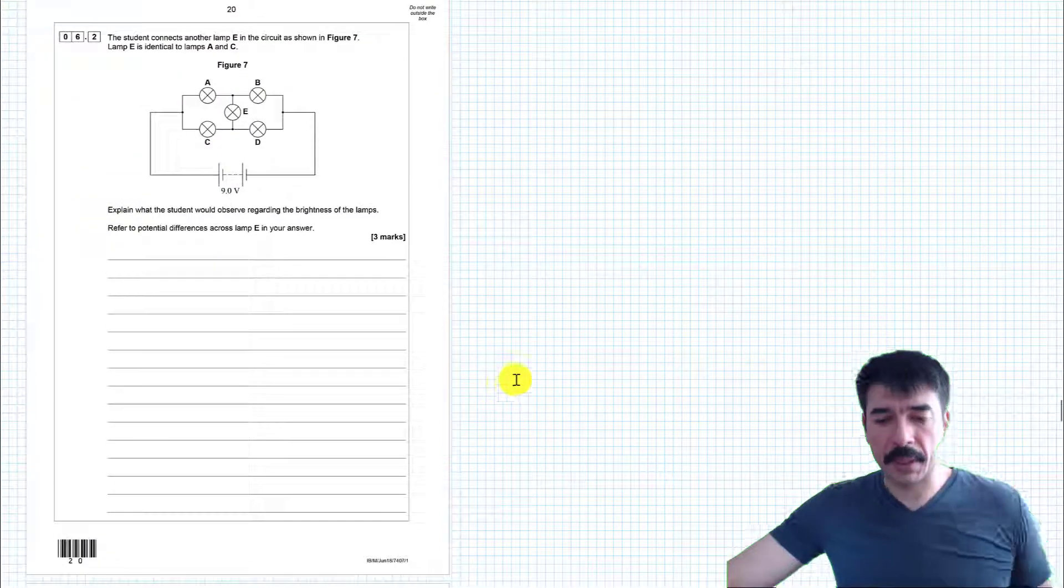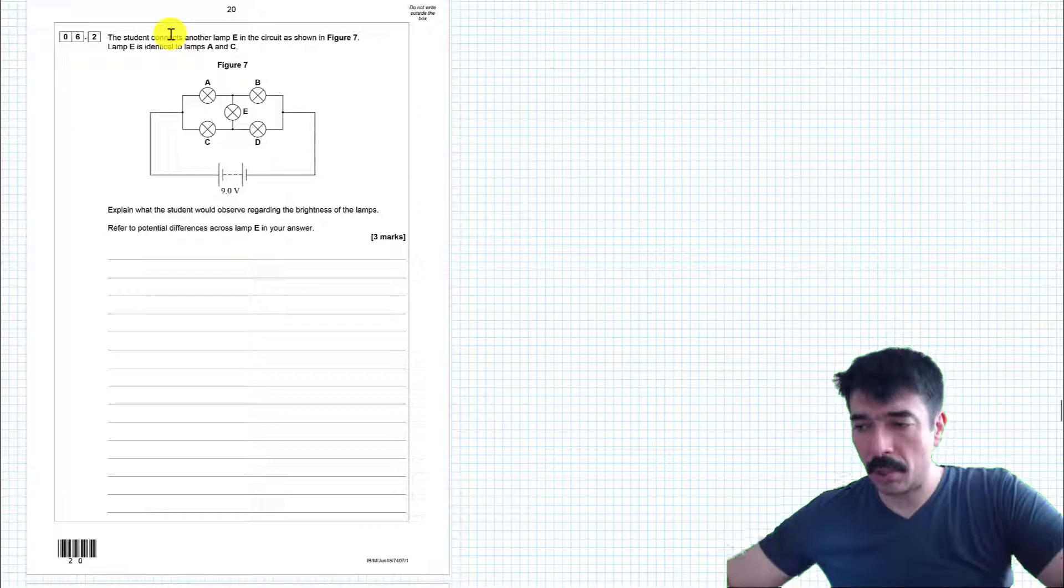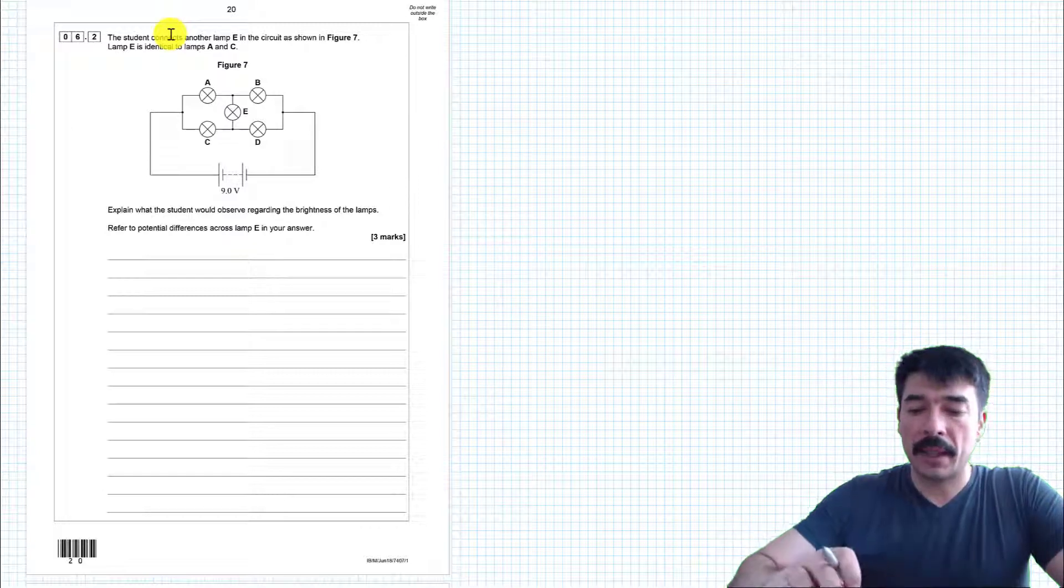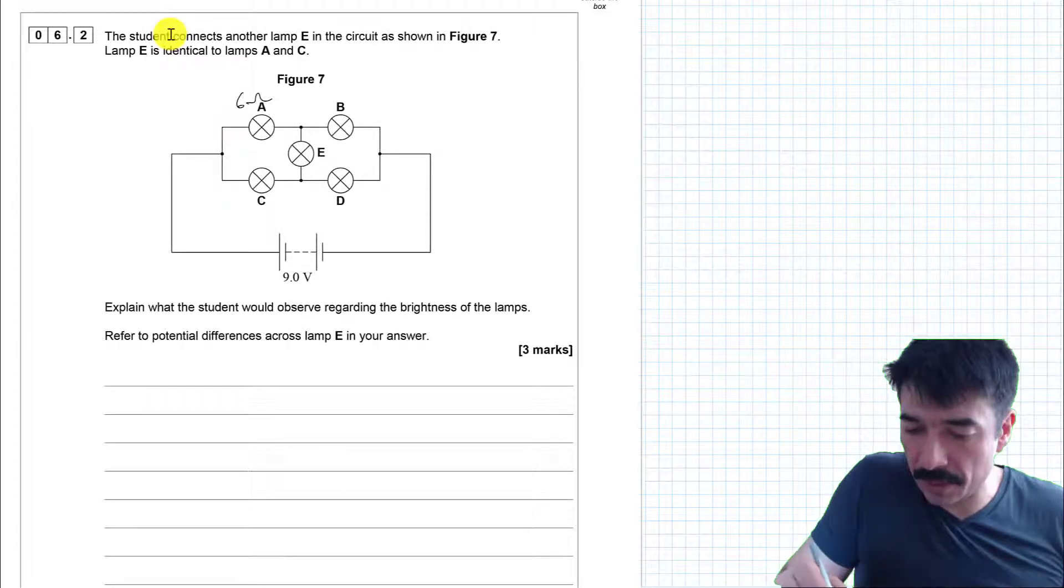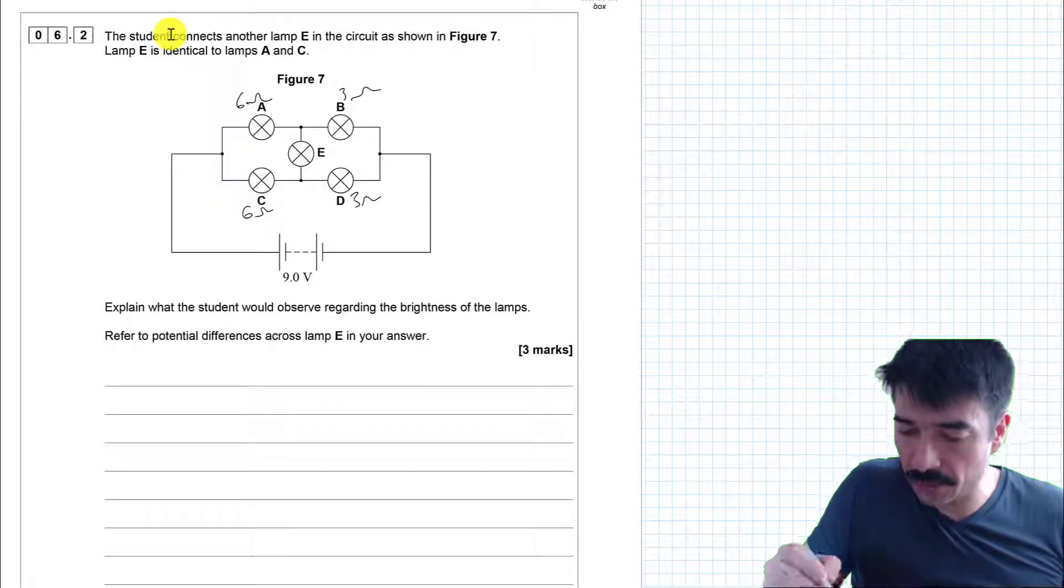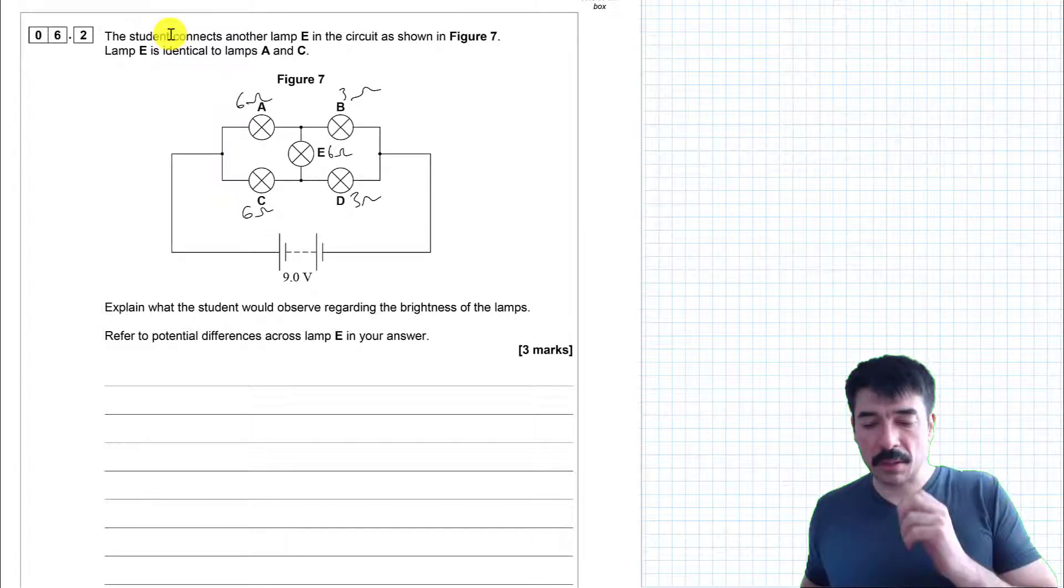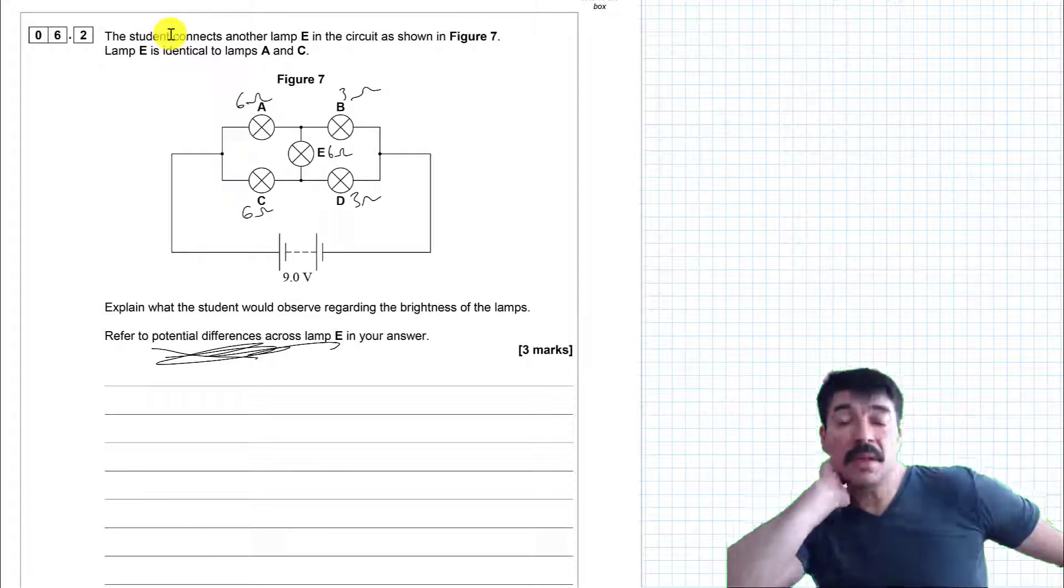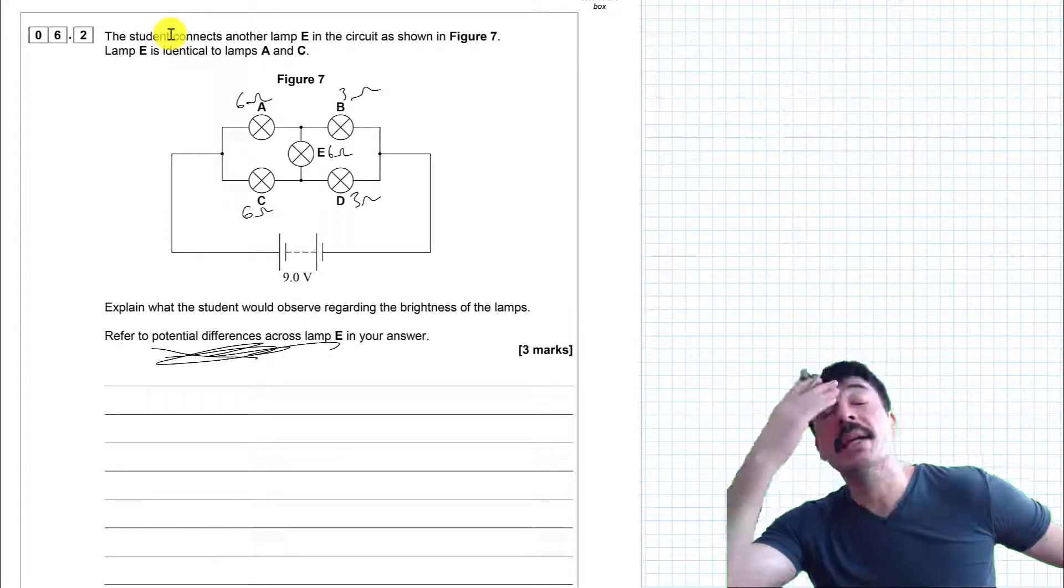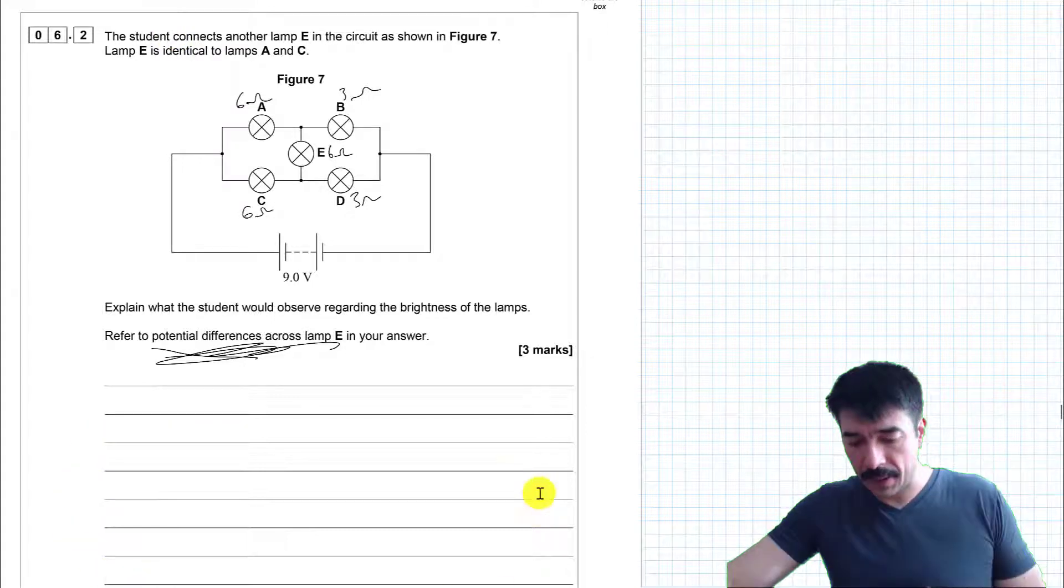Student connects another lamp E in the circuit, as shown in figure 7. Lamp E is identical to lamps A and C. So a tip I will always suggest is annotate your diagrams. So I'm going to add all the information I already know. So A is 6 ohms, B is 3 ohms, C is 6 ohms, D is 3 ohms, and E is identical to A and C, so that will also be 6 ohms. Explain what the student will observe regarding the brightness of the lamps. Refer to potential differences across lamp E in your answer. So this question, as far as I'm concerned, is something trying to get you to think about potential difference in general and potential dividers. So I've actually made a simulation of this using PHET.